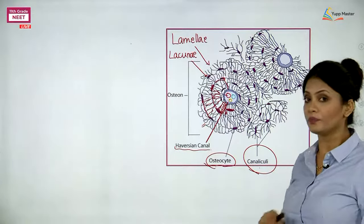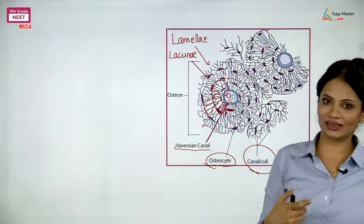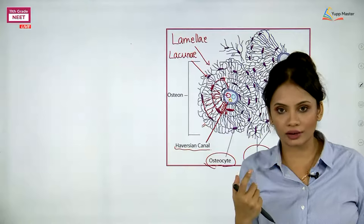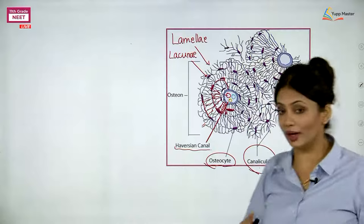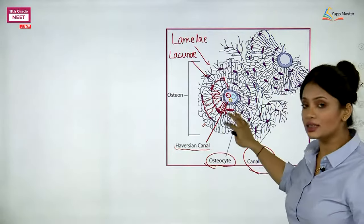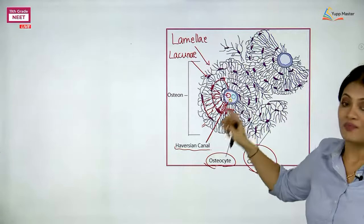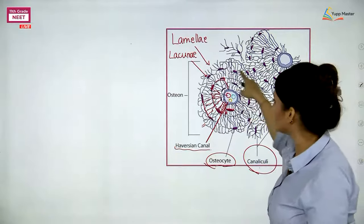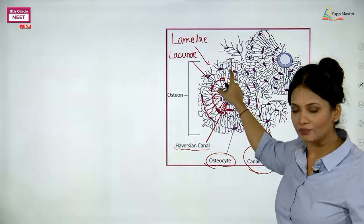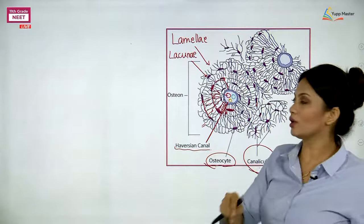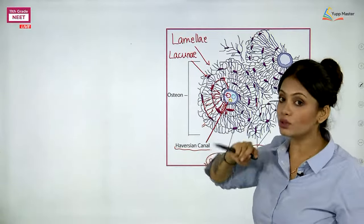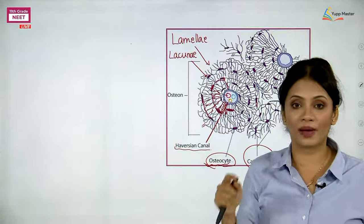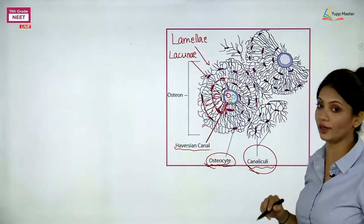Let's revise the key terms: the Haversian system is the basic unit of bone, containing a central Haversian canal with blood vessels and nerves. The matrix outside is arranged in concentric rings called lamellae. Lacunae are empty spaces within the lamellae, containing bone cells called osteocytes. Canaliculi are the passageways connecting the canal to osteocytes and osteocytes to each other.